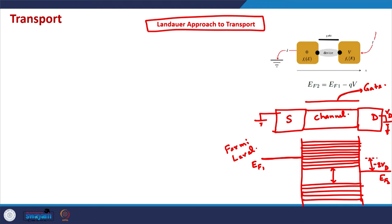By changing the voltage on the gate terminal, we can change the electric field or potential in the channel. If the potential is changed in the channel, the potential energy of the electrons can also be changed. So what the gate voltage does is shift these electronic states up or down. That is the major influence of the gate voltage — when a gate voltage is applied, all the energy states in the channel can either be shifted upwards or downwards. If a positive voltage is applied they shift downward; if a negative voltage is applied they shift upward.